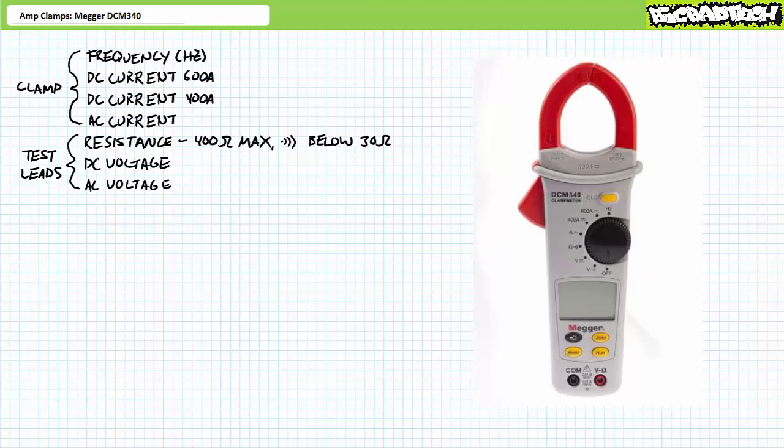The Mega DCM 340 measures DC current. Not all amp clamps can do this. This is an especially important feature for renewable energy applications like photovoltaic panels, or DC systems in off-grid houses, boats, or vehicles that necessitate DC current measurements.